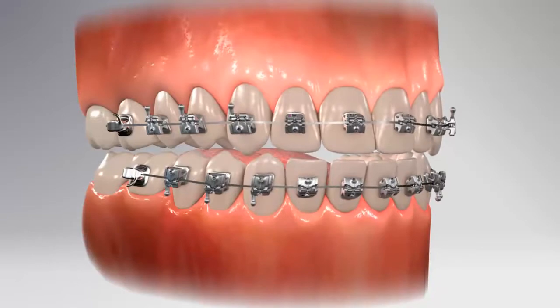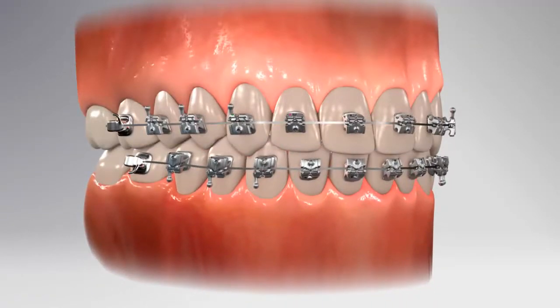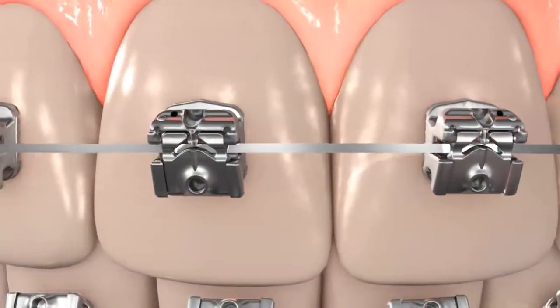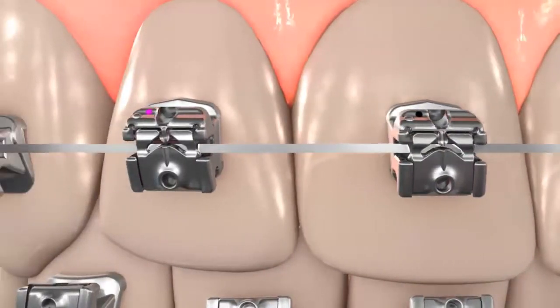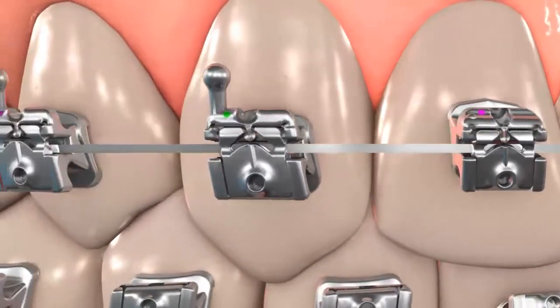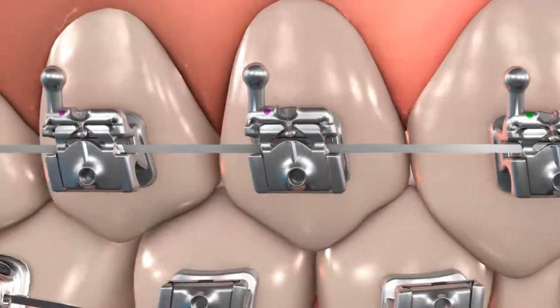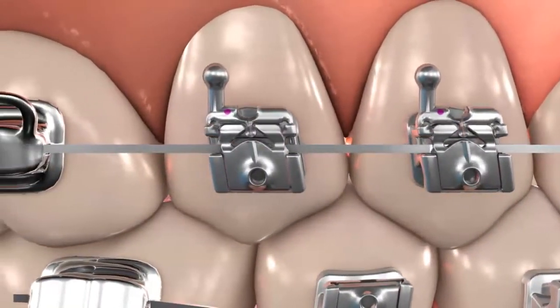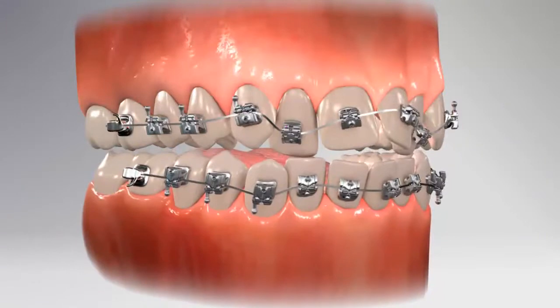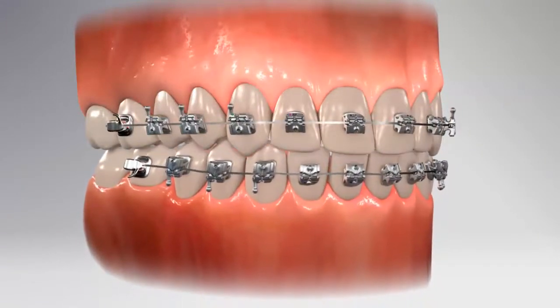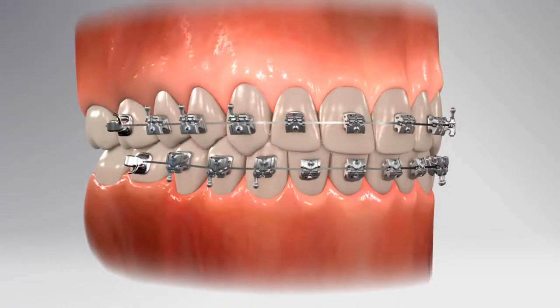Unlike the leading passive self-ligating brand, Carrier SLX brackets are tooth-size specific: larger brackets on larger teeth, smaller brackets on smaller teeth, a feature designed to ensure optimal rotational control and expression of the prescription, reducing the need for wire adjustments. The result of better control is faster and improved finishing.